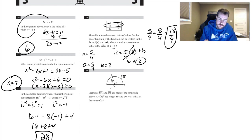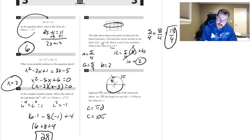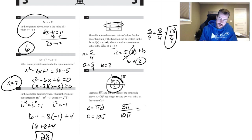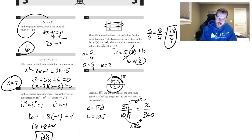Number twenty: arc length AB is 3π and the radius is 5. The full circumference is π times diameter, so 10π. Arc AB is 3π out of 10π of the full circle, and we want that fraction of 360 degrees. The π's cancel, and 3 over 10 times 360 equals 108 degrees.